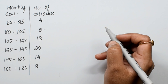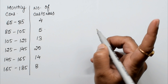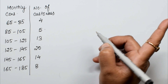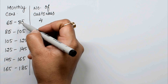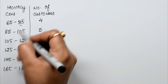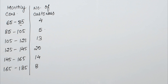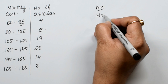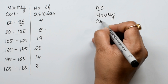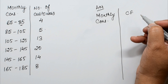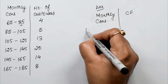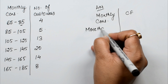We have made a more-than type cumulative frequency distribution. One important thing: in the less-than case, we use the upper limit of the class interval — less than this, less than this, less than this. But in the more-than case, we use the lower limit of the class interval.